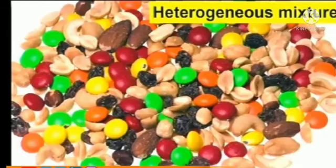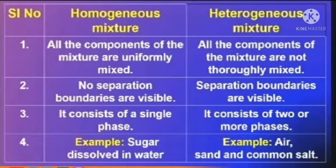Another example is different colorful gems and different types of dry fruits. Now let us look at the differences between homogeneous and heterogeneous mixtures. In a homogeneous mixture, all the components are uniformly mixed and no separation boundaries are visible. In a heterogeneous mixture, separation boundaries are visible.